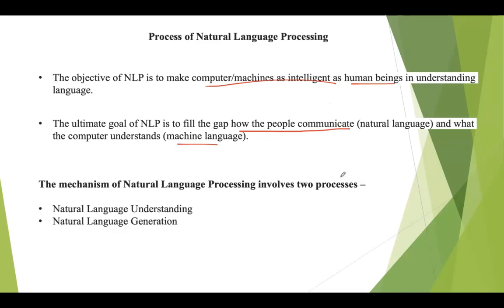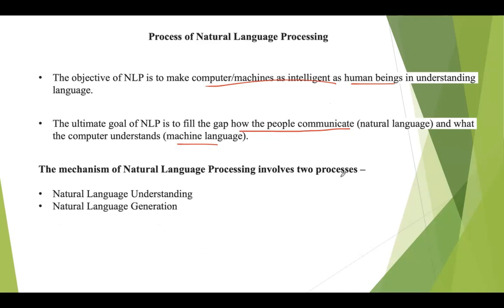There are three different levels of linguistic analysis that should be done before performing NLP. One is syntax — what part of the given text is grammatically correct. The second is semantics — understanding the meaning of the given text. The third is pragmatics — what is the purpose of the text. We need to perform this linguistic analysis before performing NLP.